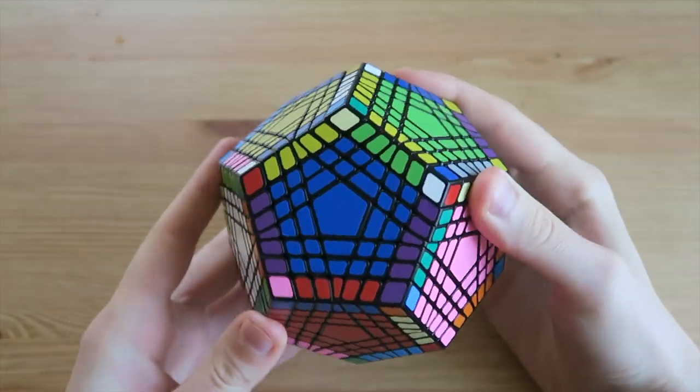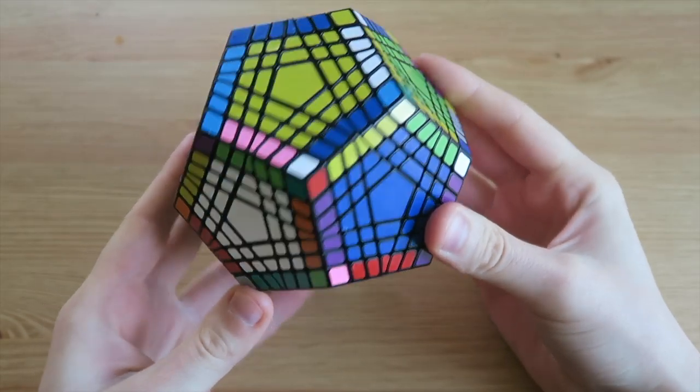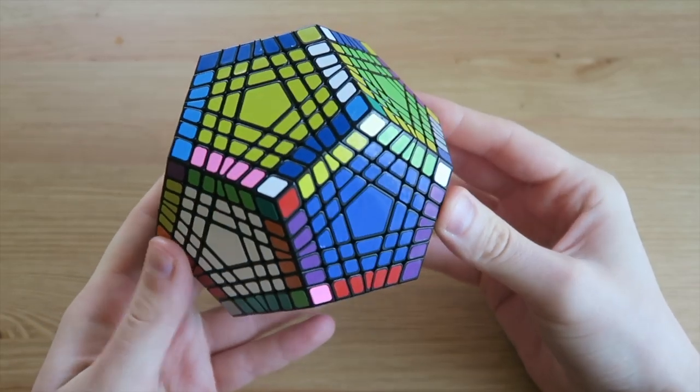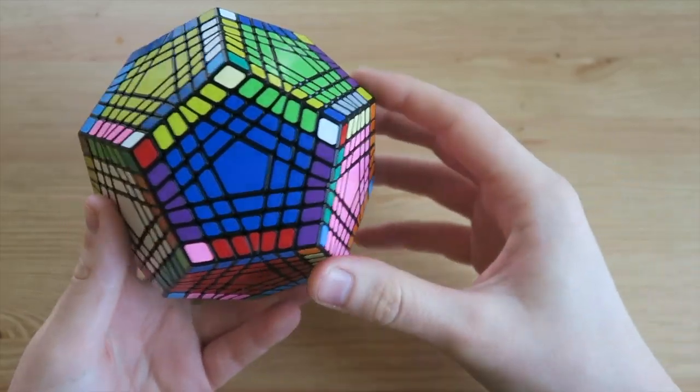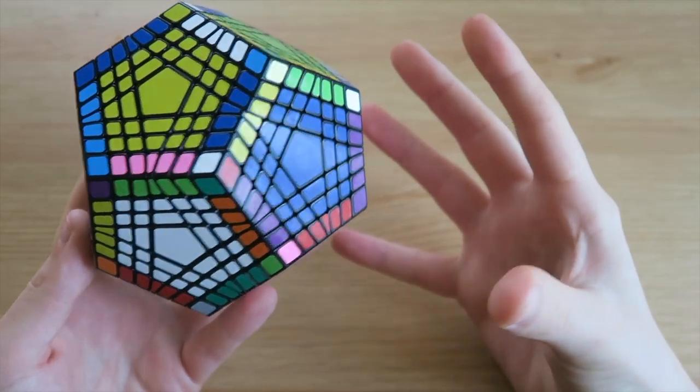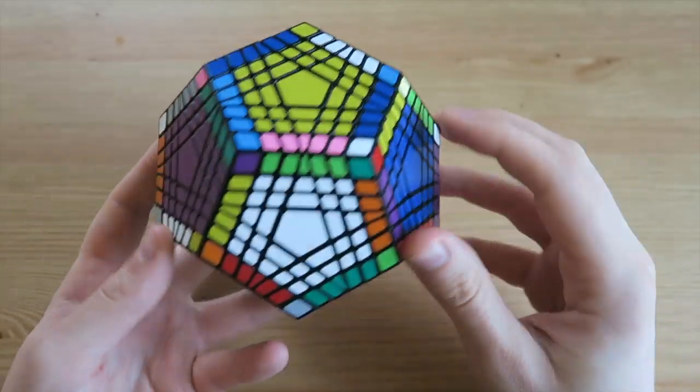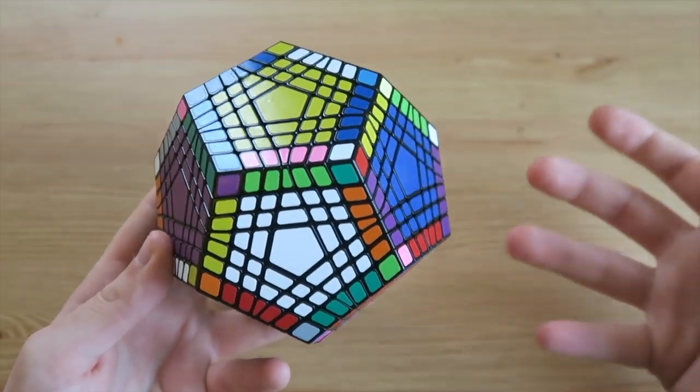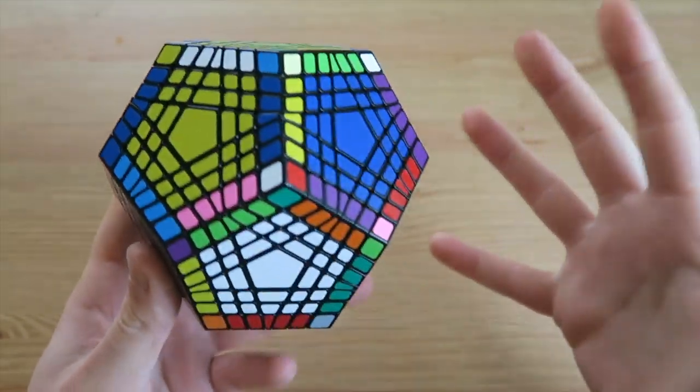Now that was kind of complicated and probably not the best way for me to explain that but hopefully you guys get the picture. You essentially have to keep three edges at your disposal at all times just so you are able to move pieces around and kind of get around parity without having to do any algorithms. So yeah that's edge pairing done.